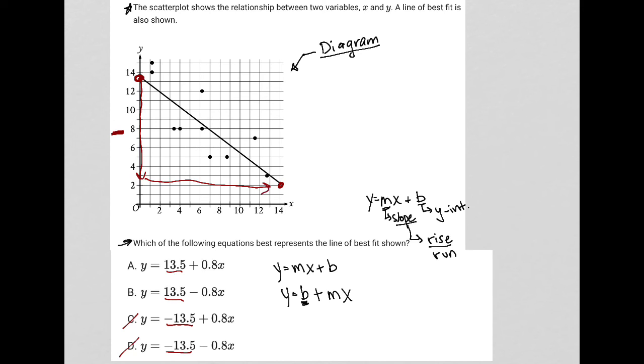Which means overall my rise over run is negative over positive, which gives me a negative slope altogether.